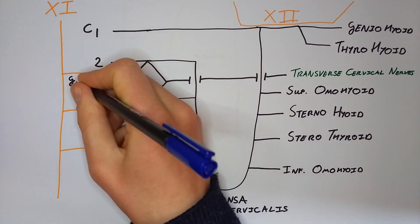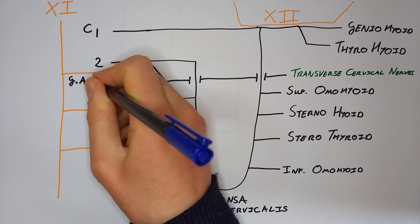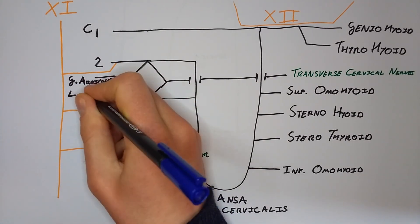And finally, after having gone across and down, we need to provide sensation above. We'll do this with the greater auricular and the lesser occipital nerves.